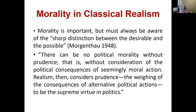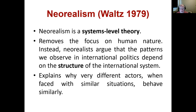New classical realism emerged in the 1990s, but classical realism isn't prominent today. Since the late 1970s and early 1980s, it has largely been replaced by neorealism. Neorealism is a system-level theory. Classical realism, with its focus on human nature, placed the explanation for conflict largely at the individual level. Neorealism moves this up to the system level, removing the focus on human nature.